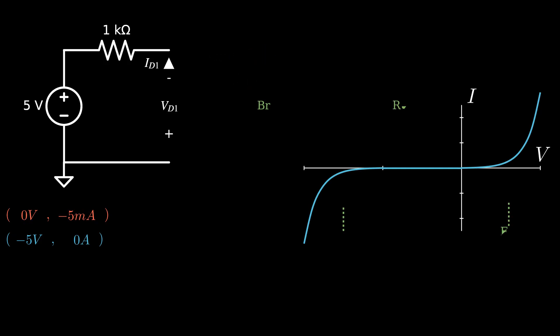We once again find these on the VI curve and connect them to make the load line. Notice this line is now in the third quadrant rather than in the first, but that doesn't mean that the intersection with the diode VI plot is any less valid of a solution. The operating point correctly lies within the reverse biased region.